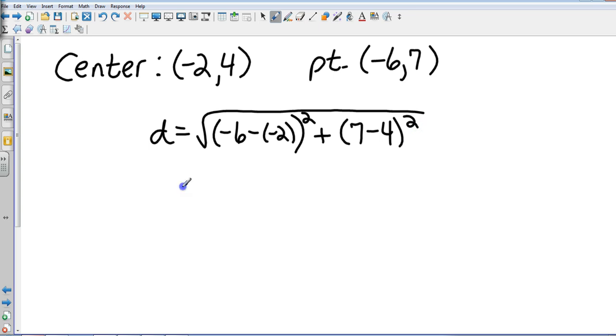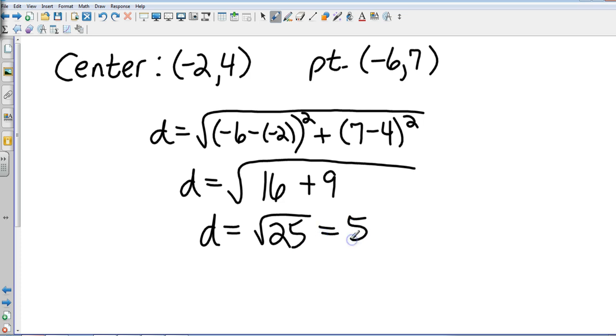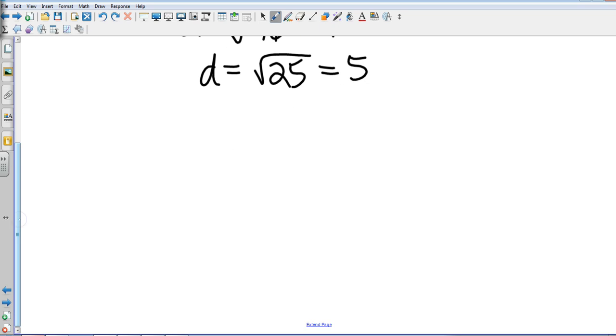My distance is, that's going to be negative 6 plus 2 which is negative 4. Negative 4 squared is 16, and then 7 minus 4 is 3. 3 squared is 9. So that gives me my distance is the square root of 25, which in this case I know is 5. So now I have a center of negative 2, 4.